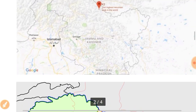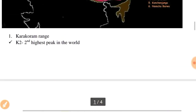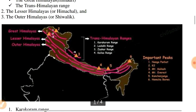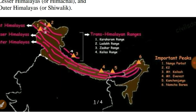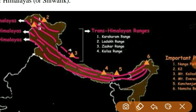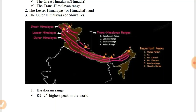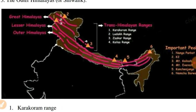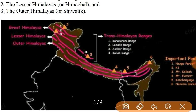The second range of Trans-Himalayas is the Ladakh range. As shown in the map, the Ladakh range is to the south of the Karakoram range. The third range of Trans-Himalayas is the Zaskar range, which lies to the south of the Ladakh range.